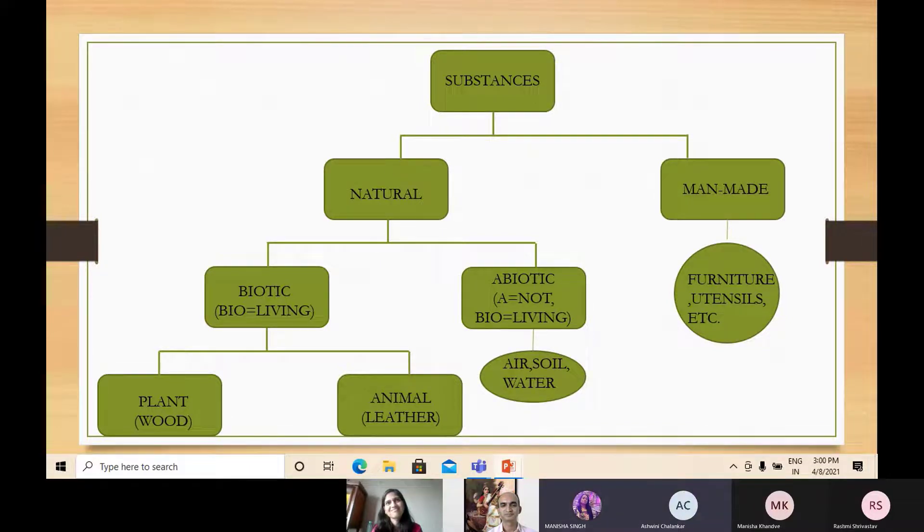Which are made by humans. Okay, wonderful. I'll just reframe your definition. Man-made substances are the substances which are obtained by processing the natural substances, isn't it? We get furniture from what? We get bricks from what? Clay, wonderful.